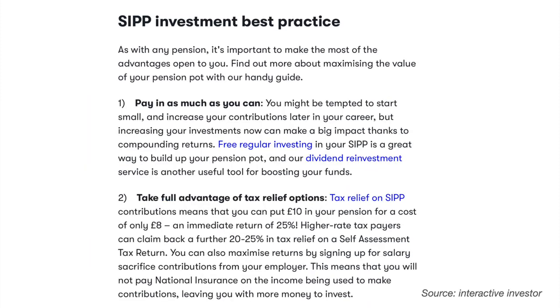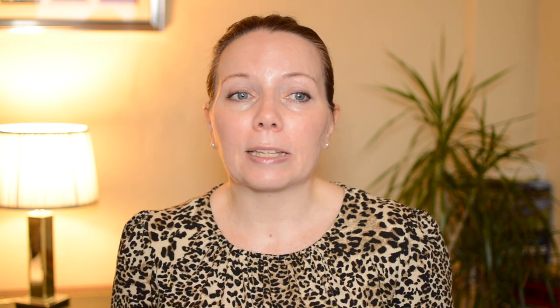We'll close off with some SIPP best practice tips from Interactive Investor. First, pay as much as you can — the more you can pay in and the younger you are, the better chance your portfolio has for growth. Do take advantage of the free regular investing within your SIPP. Second, take full advantage of tax relief options — the more money you pay into your pension, so long as you stay within your annual allowance, you will get tax relief on that money, meaning you pay less in income tax. Third, increase your contributions in line with earnings — each time you get a pay rise or a bonus, increase your contributions without it affecting your take-home pay. And lastly, build a diverse portfolio — SIPPs give you the opportunity to invest in a wider set of stocks and shares than traditional pensions.